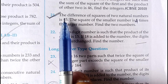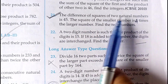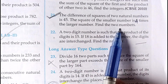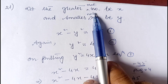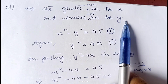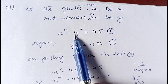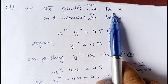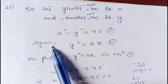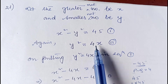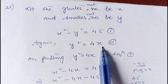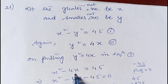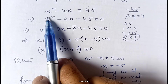Question number 21: the difference of squares of two natural numbers is 45. The square of the smaller number is four times the larger number. Find the numbers. Let the greater natural number be x and the smaller be y. From the given conditions: x² − y² = 45 (equation 1), and y² = 4x (equation 2). Substituting y² = 4x into equation 1: x² − 4x = 45.